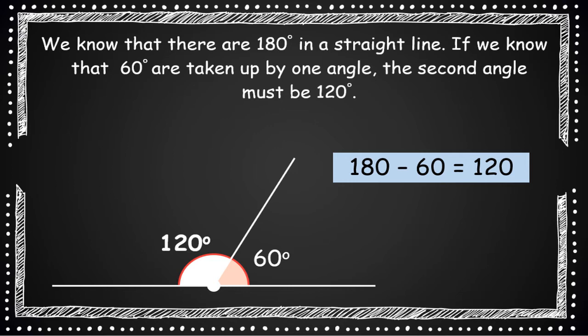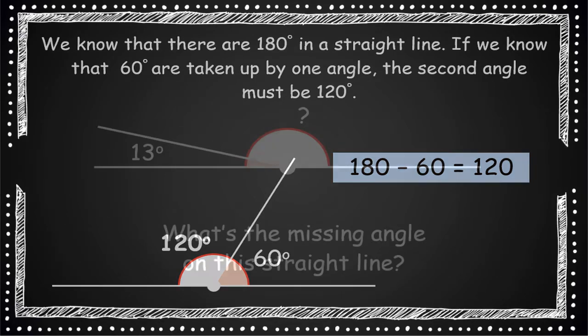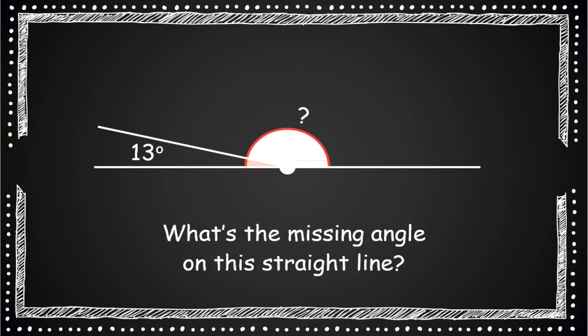Again we know there's 180 degrees in a straight line, and if 60 degrees are already taken up by one angle, the second angle must be 120 degrees. Let's go again.